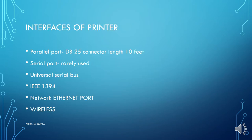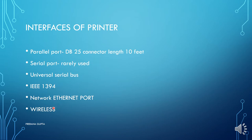Starting with interfaces of the printer — these are the interfaces used for connection of a printer: parallel port, serial port which is very rarely used nowadays, universal serial bus (USB), IEEE 1394 that is FireWire, network Ethernet port, and wireless.